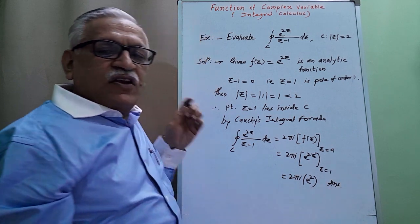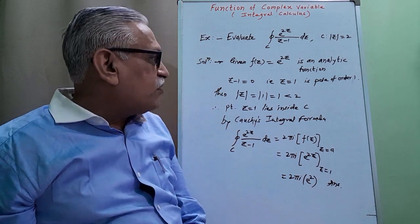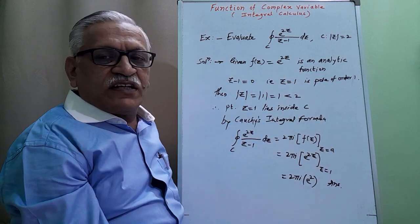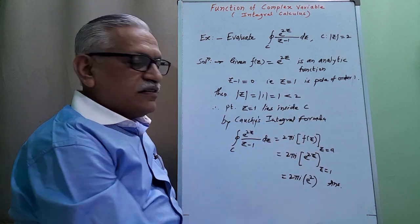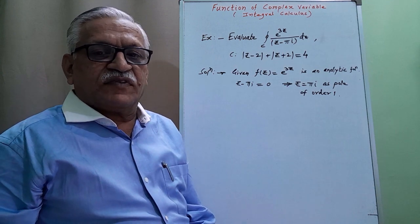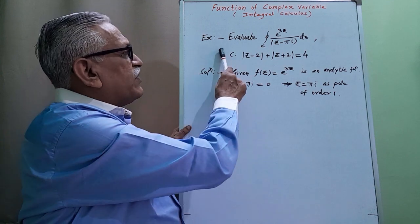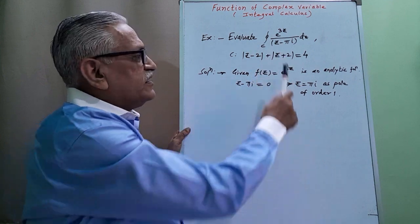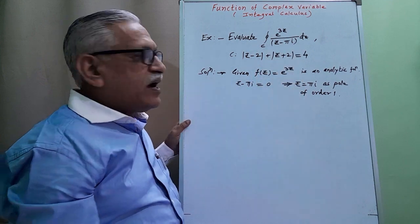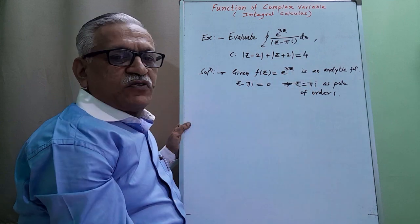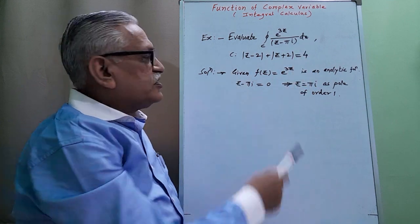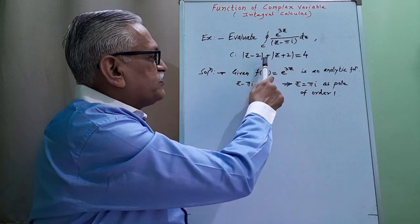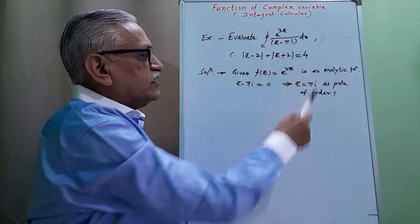This is the value of the contour integral: 2πi·e². Second example: evaluate the contour integral of e^(3z) divided by (z minus πi) with respect to z over the closed curve C, where C is |z − 2| + |z + 2| = 4.